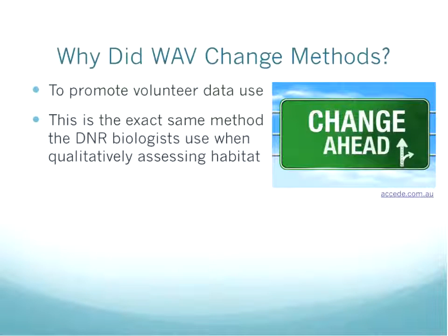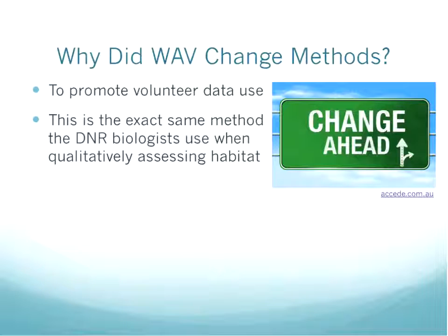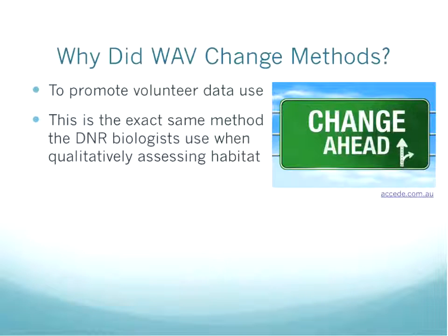With that in mind, why did WAVE change our habitat methods? One of the most often asked questions is how are our data being used by the department? With the former habitat assessment, it was set up for use by the volunteers — it wasn't used by department staff, so the numbers volunteers reported didn't immediately mean anything to department staff. The method we're using now is the qualitative habitat assessment that DNR Water Quality Biologists use at their sites. It's exactly the same as what they do, so when you collect information and get a number, that actually means something to the biologist without extra processing. Apples to apples can be compared.